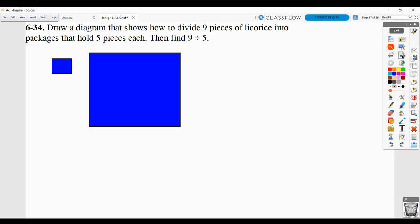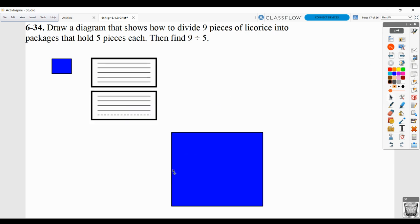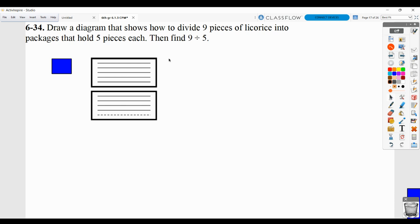Then you have to draw a diagram that shows how to divide 9 pieces of licorice into packages that hold 5 pieces each. Your sketch should look something like this. Here's a package holding 5 pieces of licorice. But we also have 4 more pieces of licorice left. So that will partially fill this package. Specifically, it will fill it 4/5 full. We can see that we can create one whole package and 4/5 of another. The dashed line is representing the missing piece of licorice we would need to make that package full.